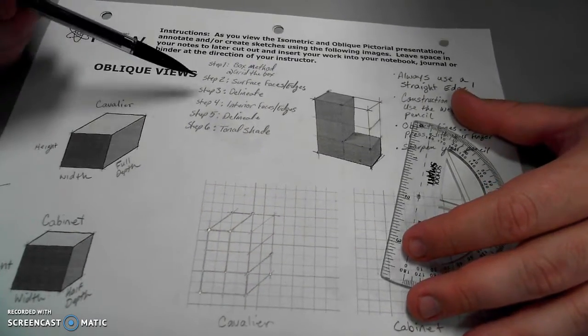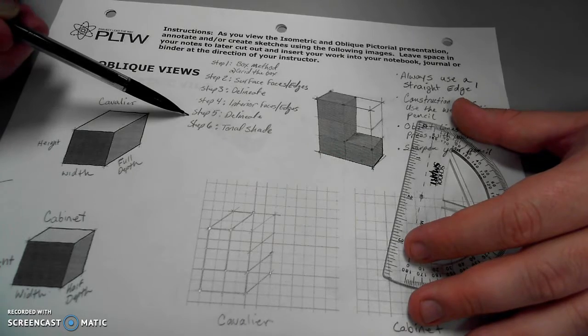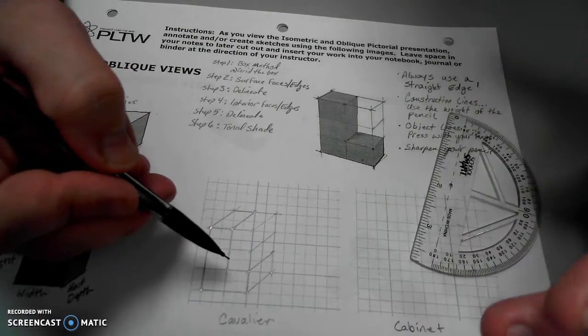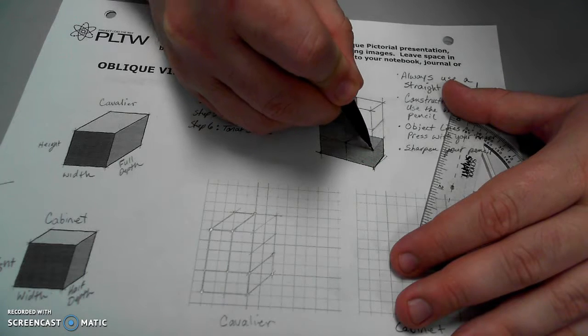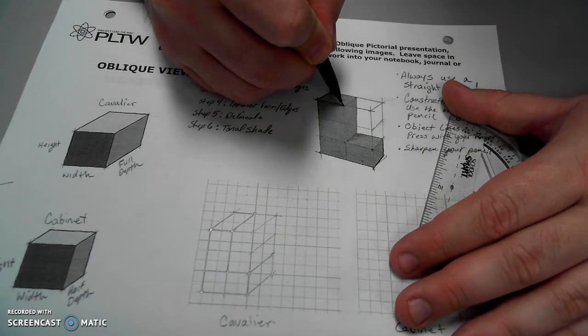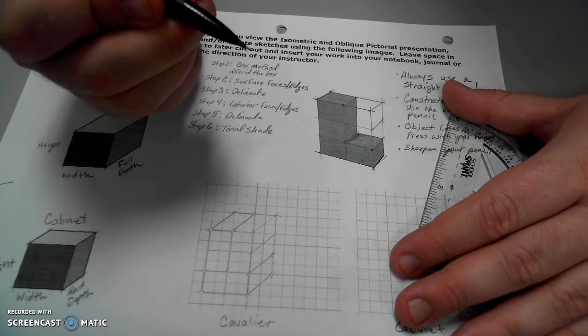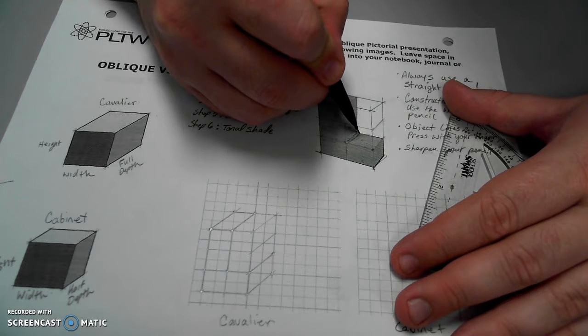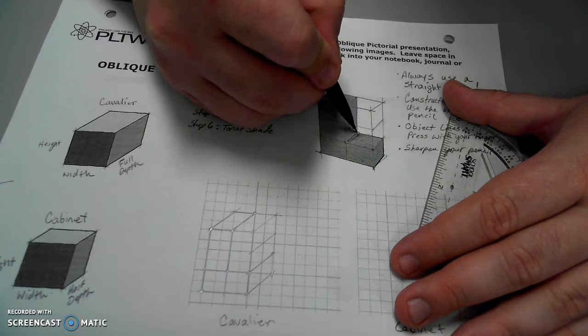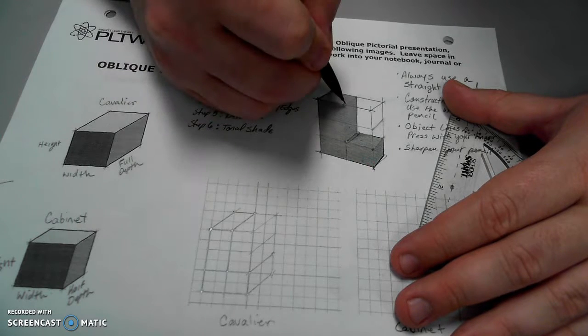My next step, now that I've delineated all my surface faces, is to do my interior faces and edges, and delineating them as I go along. It's a little trickier, especially as the objects get more and more complex. Right now, I can start here, here, or here. My interior edges will be this edge, where the top and right side face intersect with each other, and they create an edge. And then there's the back edge of this top face, and the back edge of this right side face.